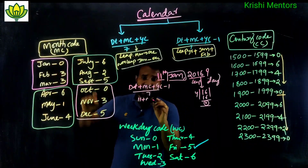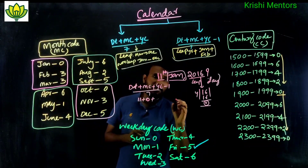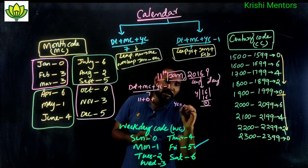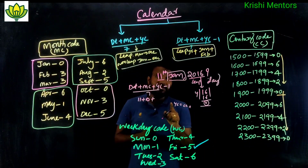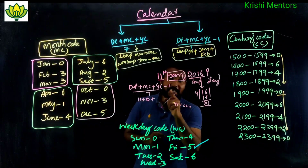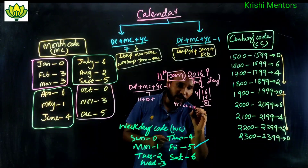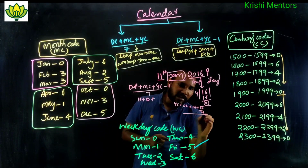Year code calculation: century code for 2000–2099 = 6. Last two digits = 16. So: year code = 6 + 16 + (16 divided by 4) divided by 7. 16 by 4 = 4, so 6 + 16 + 4 = 26, then 26 divided by 7.